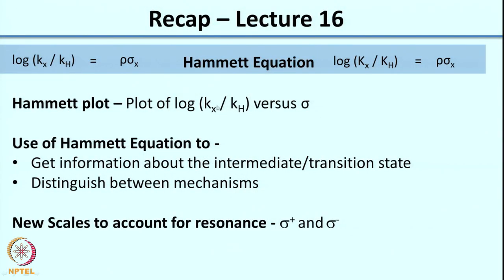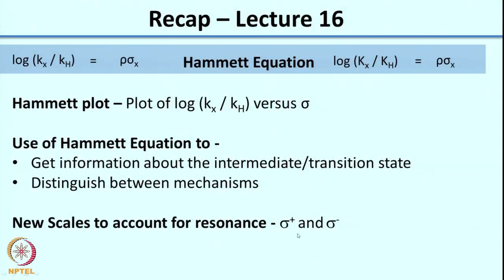Over the last couple of lectures, we were looking at how we can use the Hammett equation as well as the Hammett plot for a particular reaction to figure out the nature of the intermediate or the transition state. We had seen examples where the Hammett equation could be used to get information about the intermediate and the transition state, and we had also seen how we could use it to distinguish between mechanisms. We also saw that in reactions which involve conjugation of a positive or negative charge with the aromatic ring, there is a need to introduce two new scales: the sigma plus and the sigma minus scales.